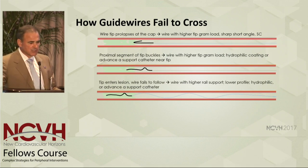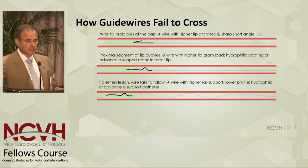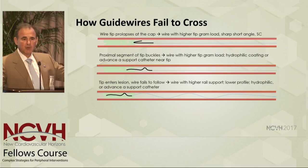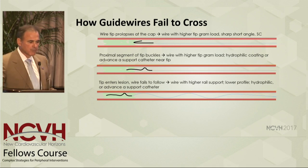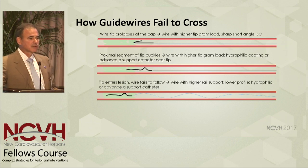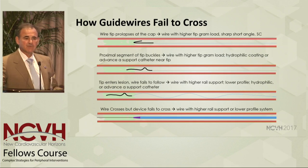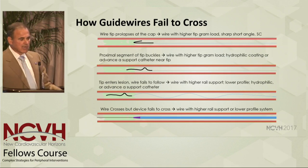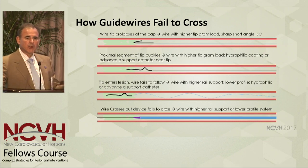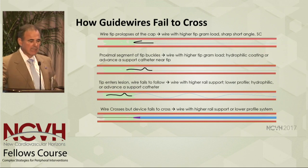If the tip enters a lesion but the wire fails to follow, you can either use a wire with higher rail support, use a lower profile wire — going from 035 perhaps to 018 or 014 — change to a hydrophilic wire, or bring a support catheter near the tip. If a wire crosses but a device fails to cross, you can use a wire with higher rail support, switch to a lower profile system, or in some cases use specialty devices to core out a channel to allow you to get through.